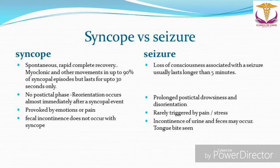Some seizures can mimic syncope and vice versa. In a syncopal attack, there is spontaneous, rapid, and complete recovery. Myoclonic and other movements may be seen in up to 90% of syncopal episodes but last only about 30 seconds, whereas in a seizure the loss of consciousness lasts longer than five minutes. There is no postictal phase in syncope — reorientation occurs almost immediately — whereas seizures have prolonged postictal drowsiness and disorientation. Syncope is provoked by emotions or pain; seizures are rarely triggered by stress or pain. There is no fecal incontinence in syncope, whereas seizures can have urinary and fecal incontinence and tongue bite.